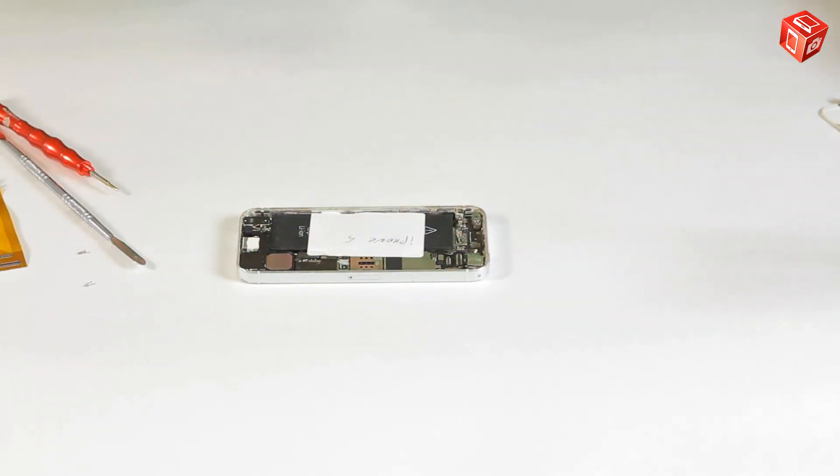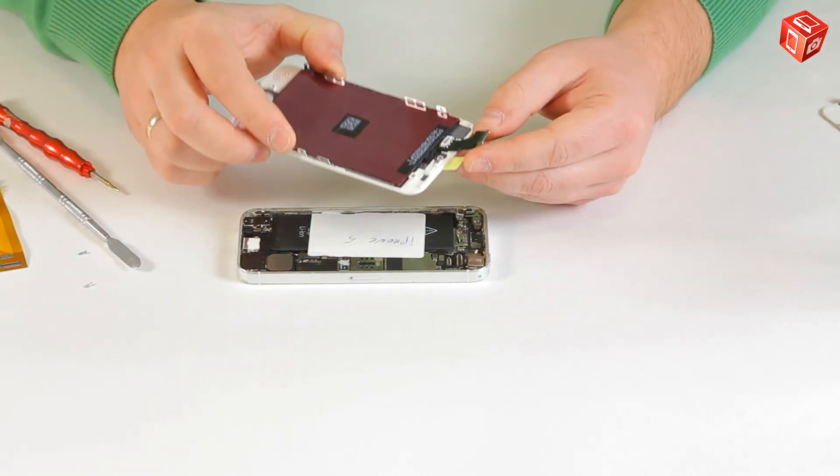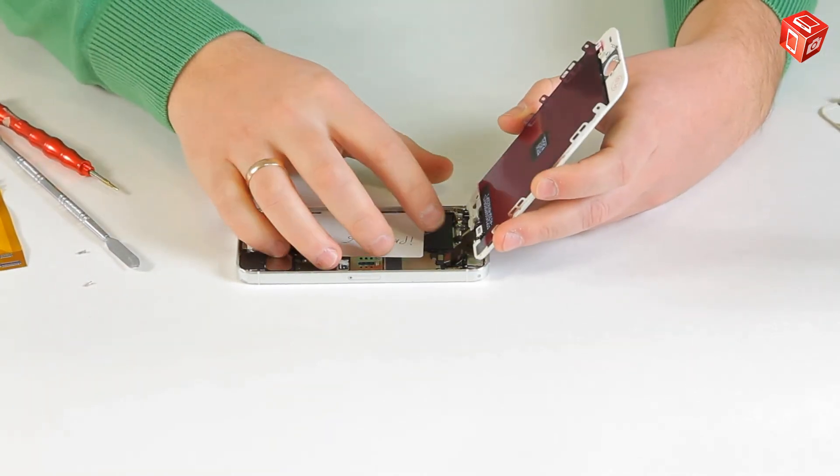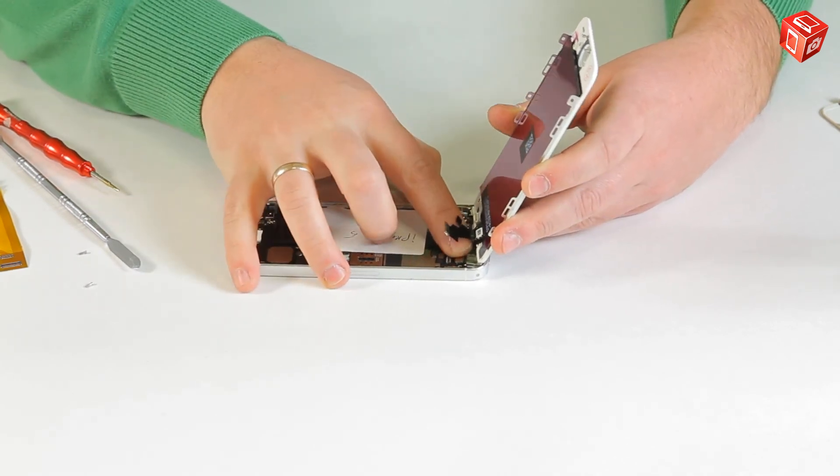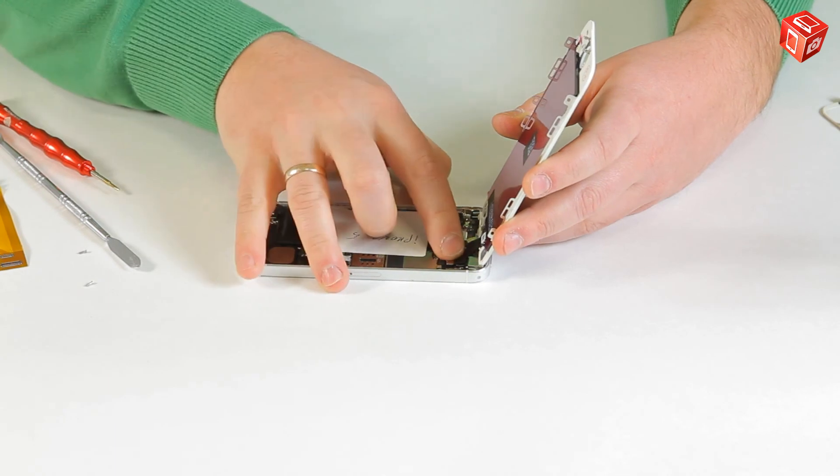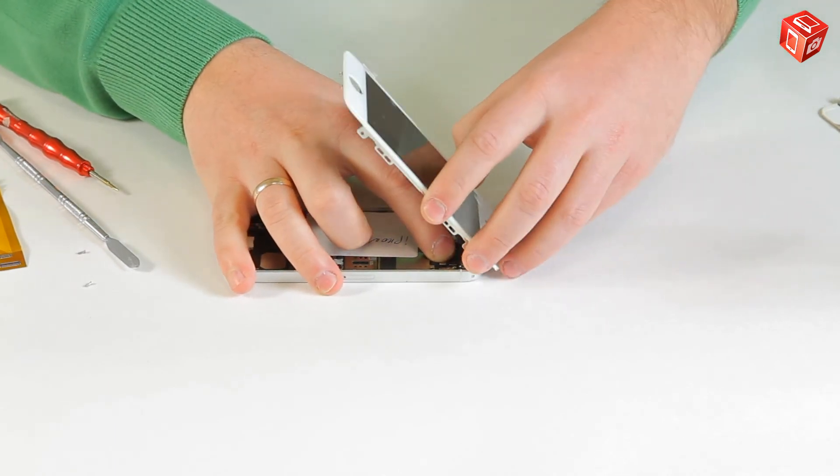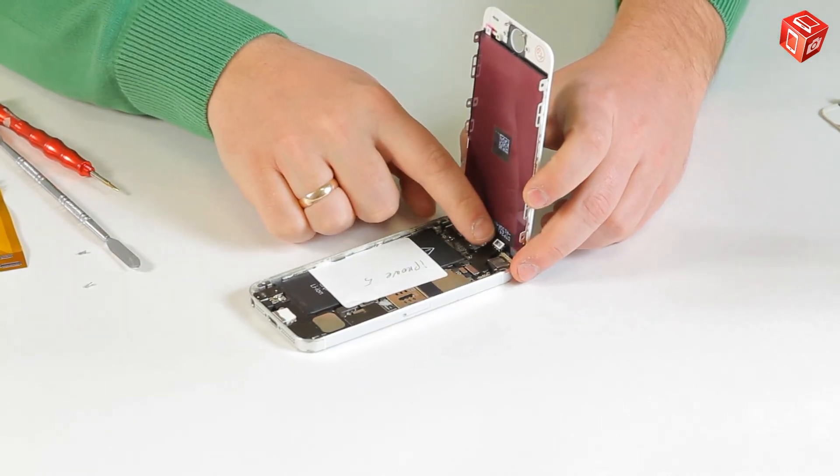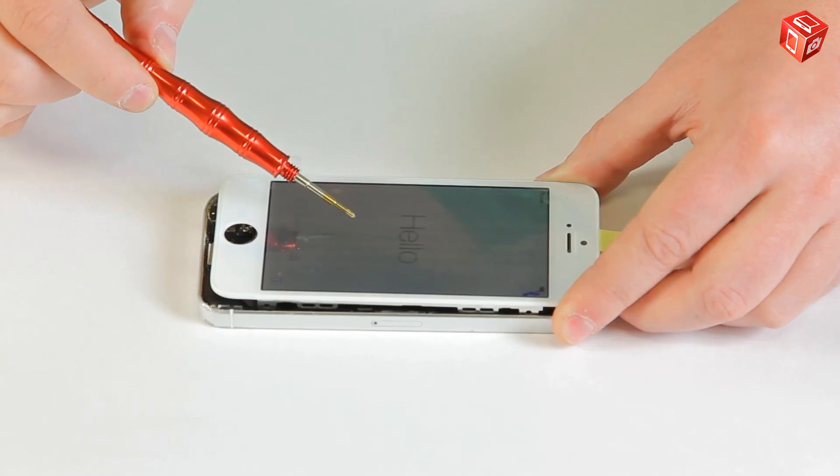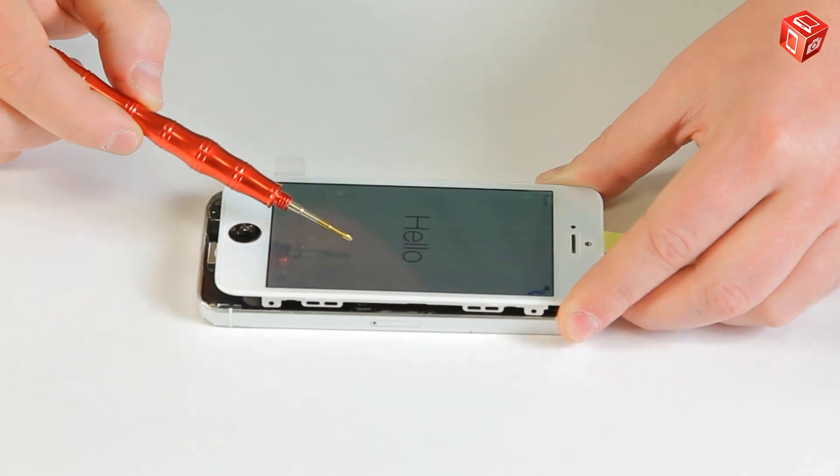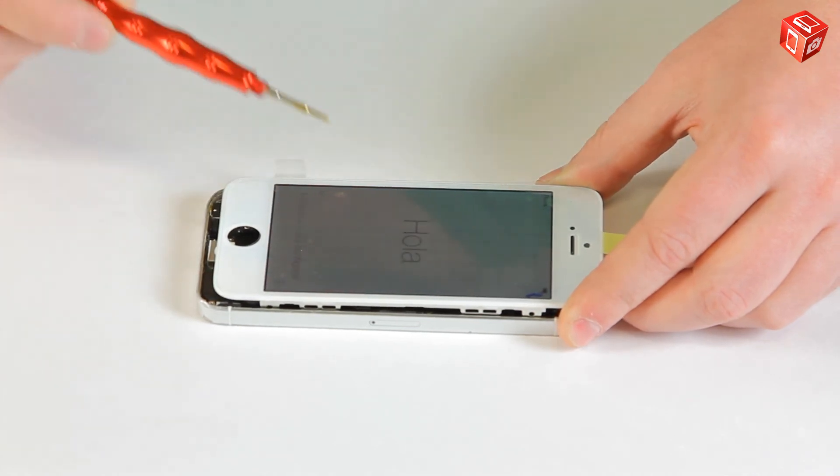Now I will demonstrate how the majority of people connect the display module for testing. This is often done without bending the flat cable. As a result, it bends by itself near the display or touch screen and breaks which leads to display failure, touch screen failure, and many other problems.